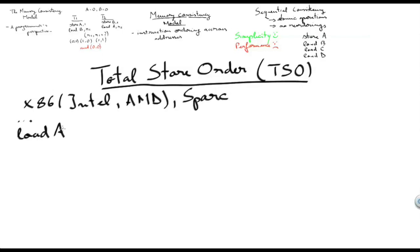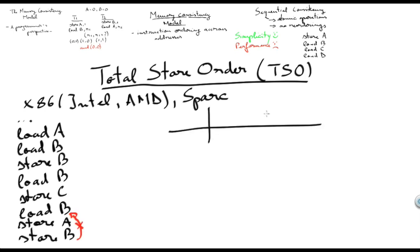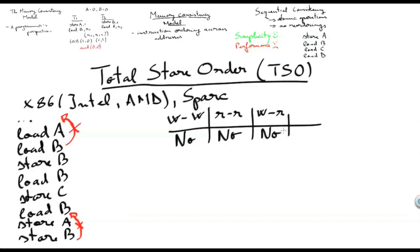To better understand this memory consistency model, let us look at a very simple example. The rules of the Total Store Order Memory Model are as follows. First, this memory model says that writes are not reordered with respect to other writes — in our example, the store to B cannot be executed before the store to A. Second, reads are not reordered with respect to other reads — the load of B will not be executed before the load of A finishes. Third, writes are not reordered with respect to reads — for instance, the store to C will not be executed before the load of B completes.